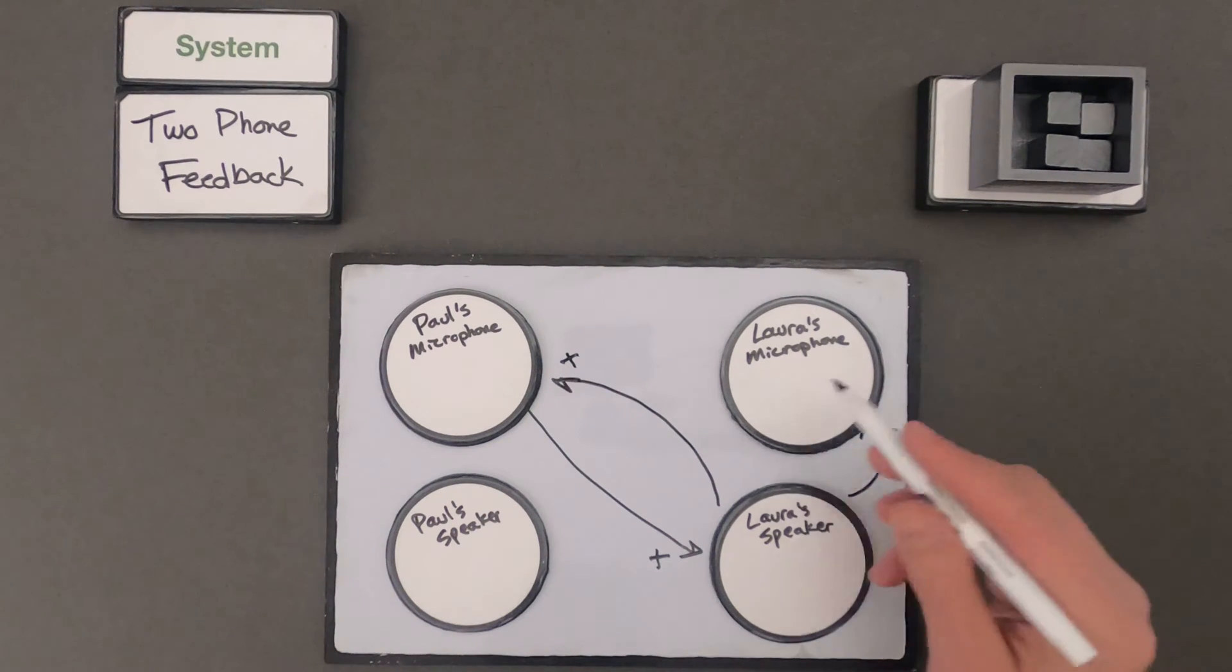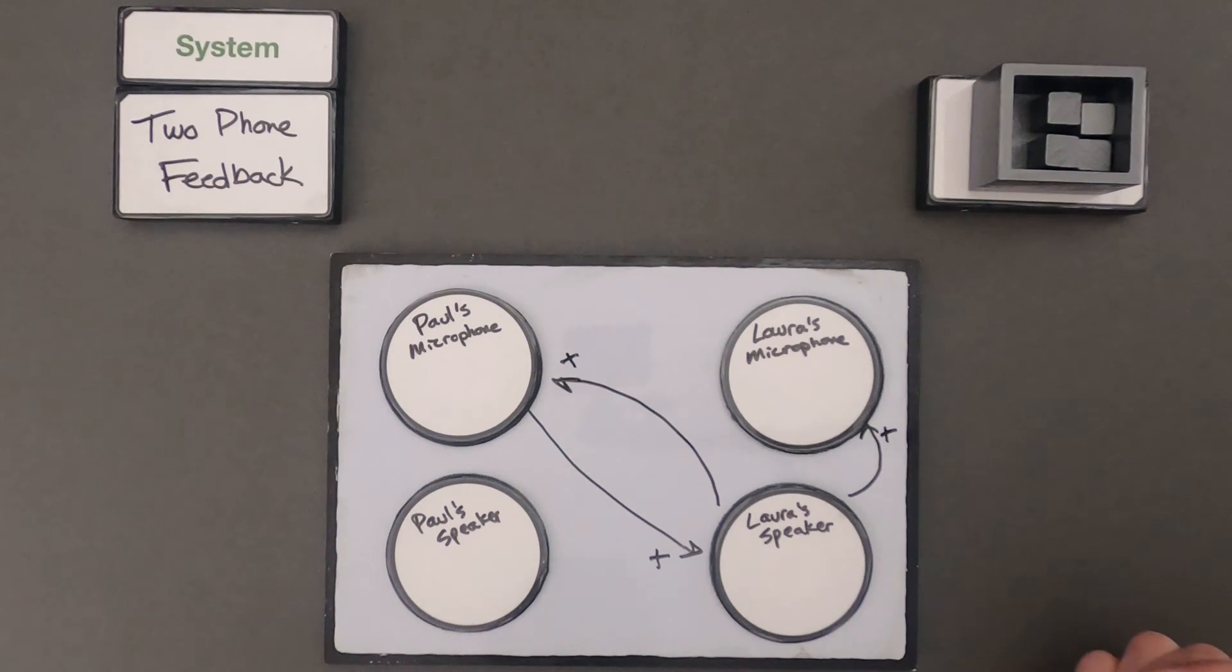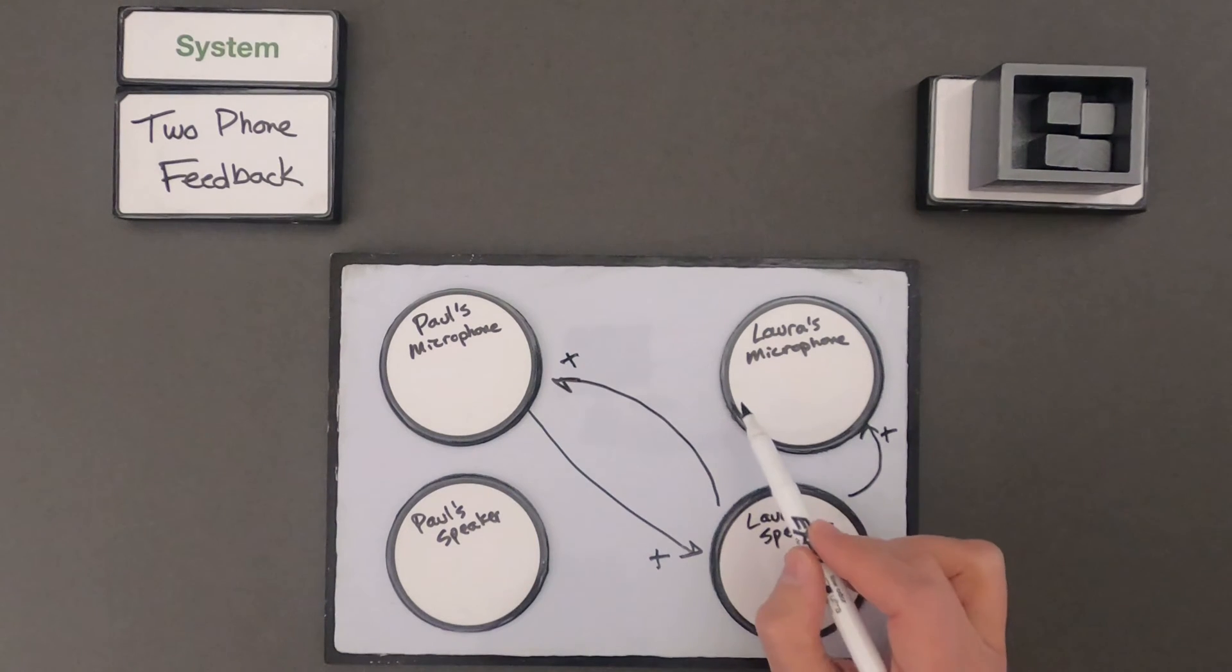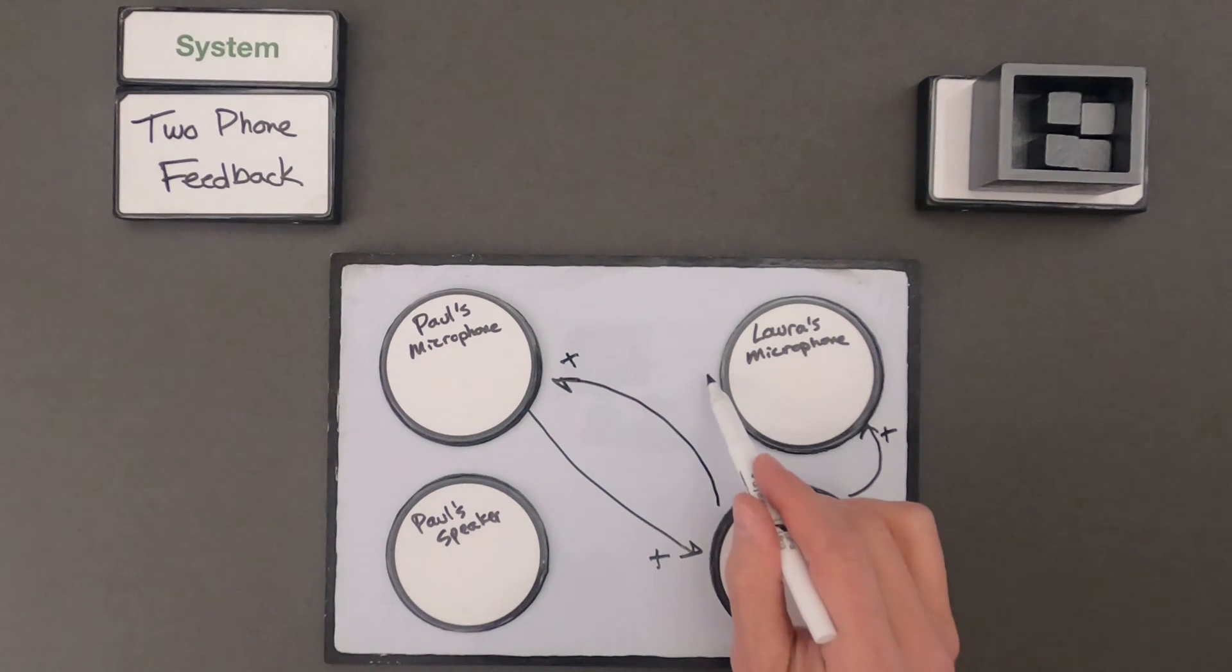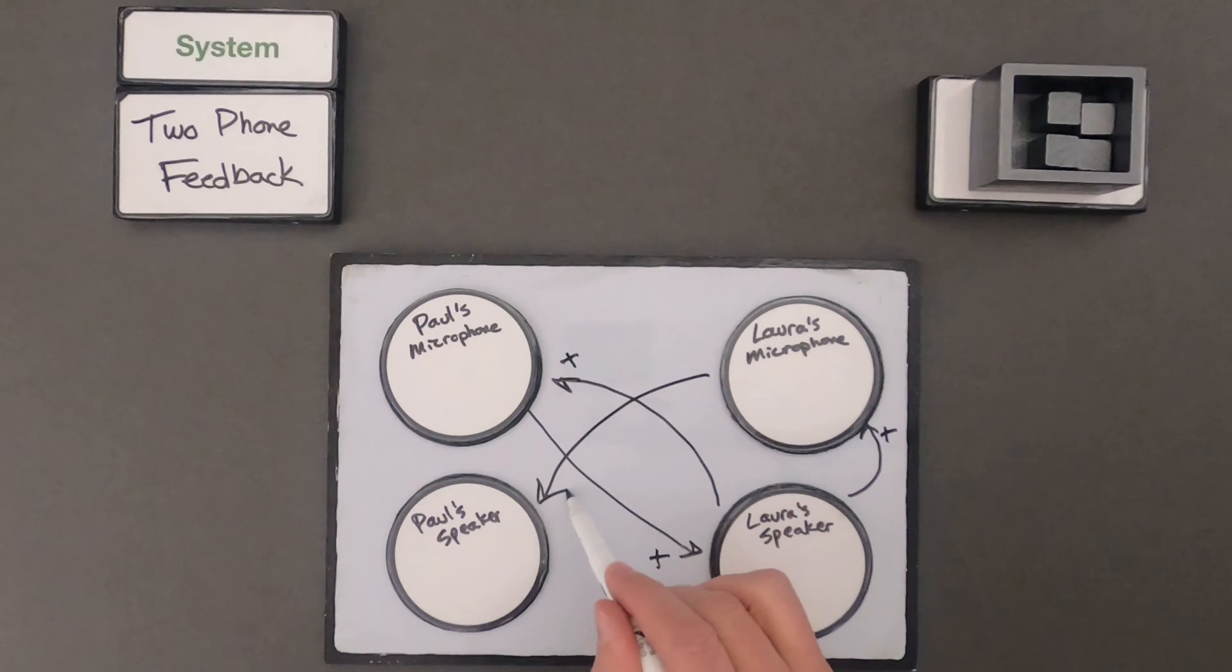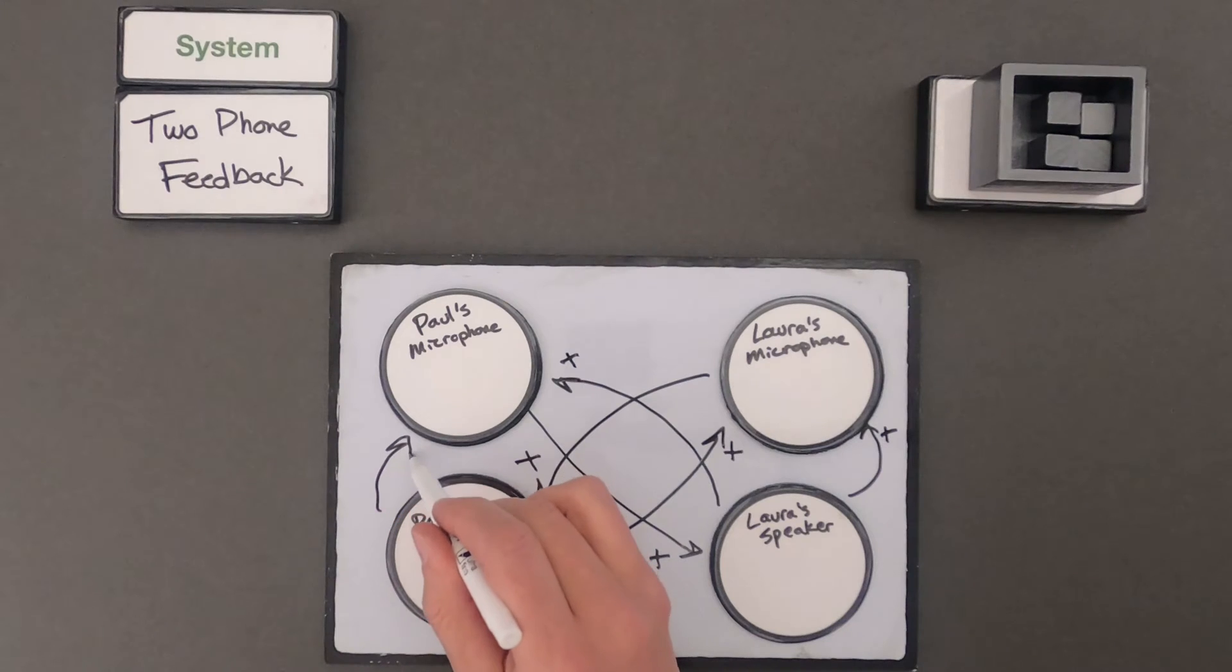So we're going to get a positive feedback there. If we look at the other way, let's look at Laura's microphone. So Laura's microphone, if she speaks into it, the volume is going to increase my volume. So there'd be a positive relationship there. When sound comes out of my speaker, it's going to go back to Laura's microphone, but it's also going to go to my microphone as well.